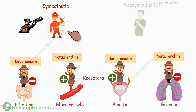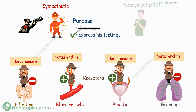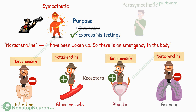Now you might ask, why doesn't the sympathetic guy himself send a specific message to each organ right away? The answer is that the purpose of sending the message is not to give orders to the target organ in the first place. Rather, spreading messages is the way for the sender to express his feelings. The sympathetic guy is not trying to give specific instructions to any organ — sending the message noradrenaline is his way of saying that he has been woken up and there is an emergency. When he says that, his job is done. Now it's up to each organ to decide what to do in response to this news, and they use variations in receptors to decide that.